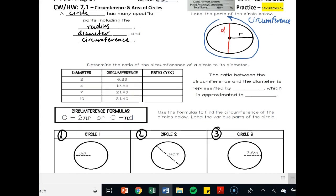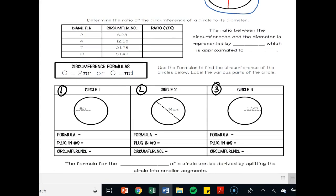We're going to find out something cool about circles here. It says, determine the ratio of the circumference in the circle to its diameter. So we take 6.28, its circumference, and we divide it by 2, its diameter. Let's see what we get. 6.28 divided by 2 gives us 3.14.